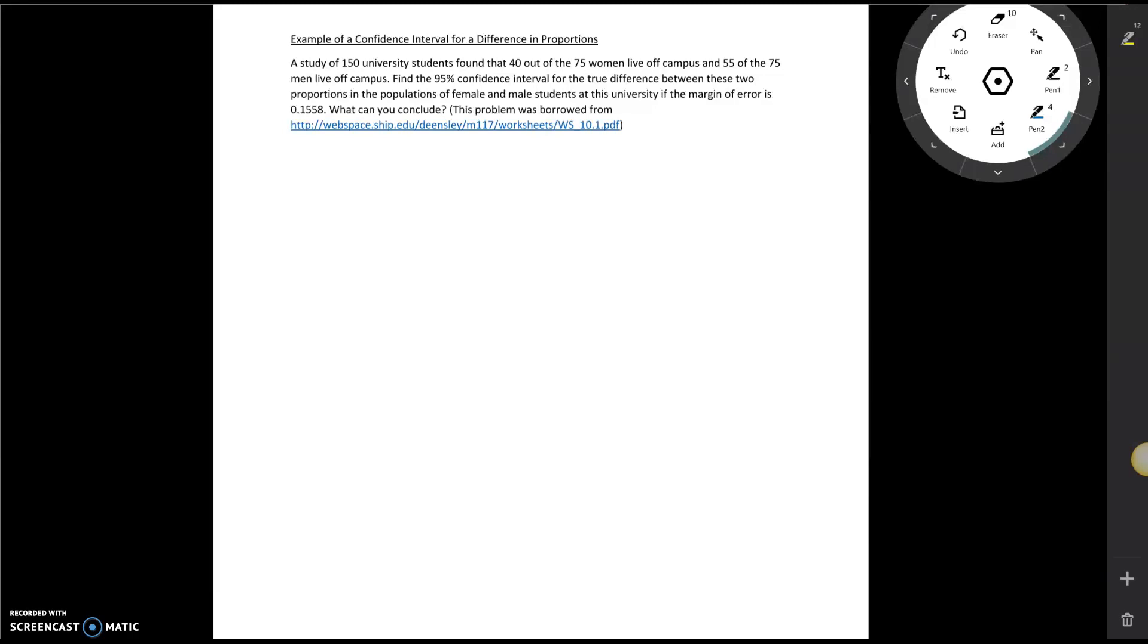In this video we're going to look at an example of a confidence interval for a difference in proportions. The prompt says a study of 150 university students found that 40 out of the 75 women live off campus and 55 of the 75 men live off campus.